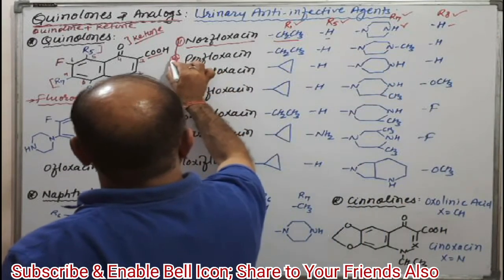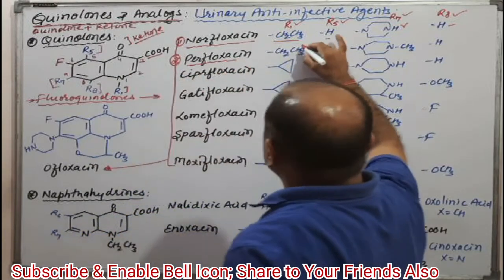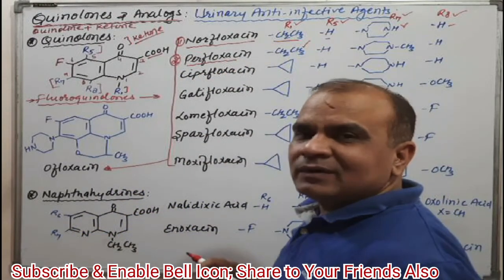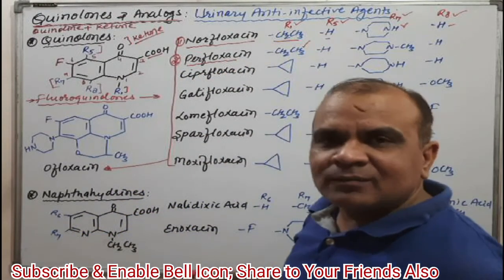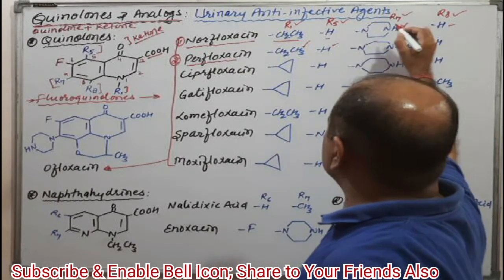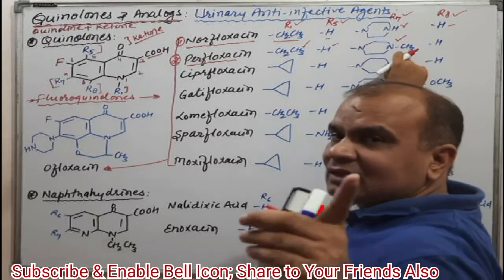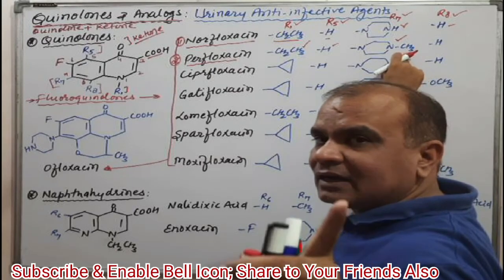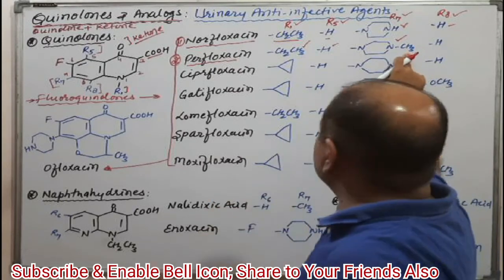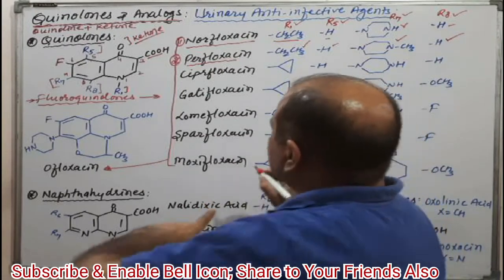Similarly, the second molecule is pefloxacin. Pefloxacin has an ethyl group at R1 (two carbons), R5 is hydrogen, R7 is a N-methyl substituted piperazine ring system, and R8 is hydrogen.